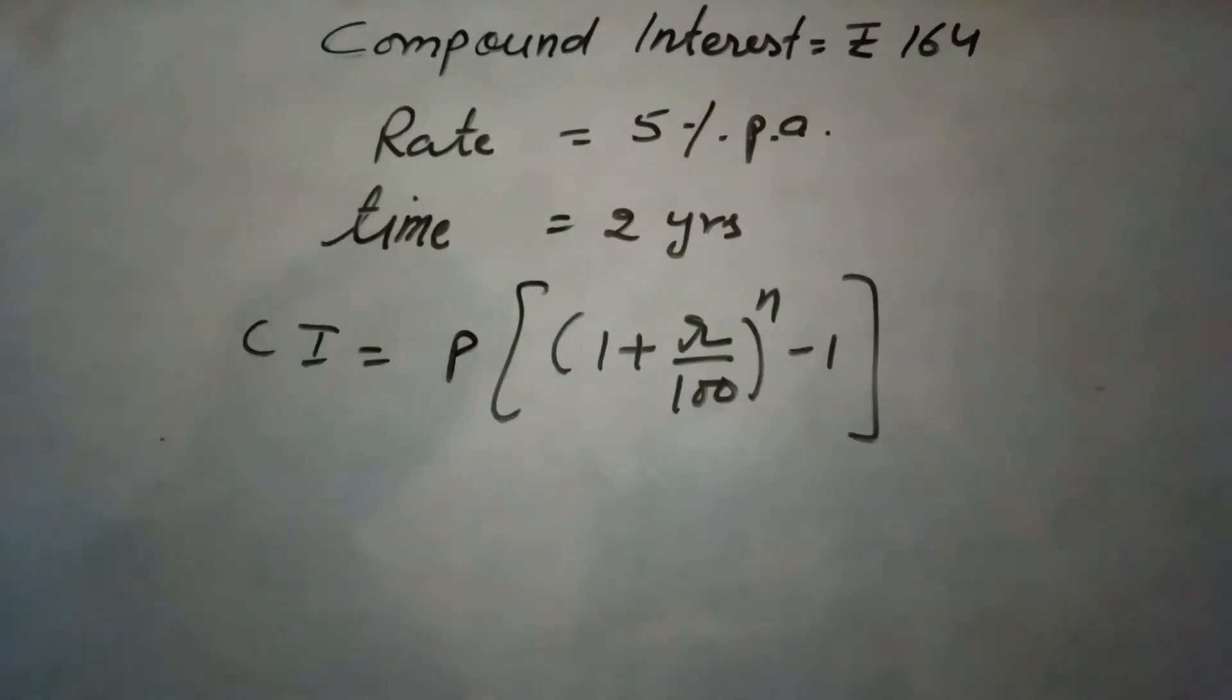Now here the question is, on what sum will the compound interest at 5% per annum for 2 years compounded annually be 164 rupees?